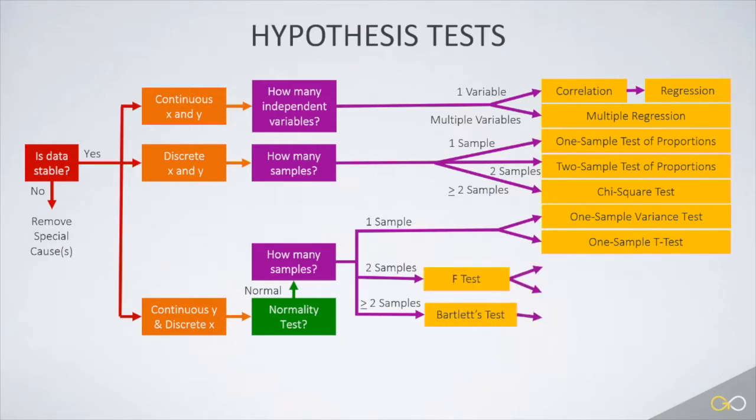If more than one sample, we need to do a variance test, either the f-test or the Bartlett's test. This is because the remaining tests are conducted differently, depending upon the answer to the question of whether the variances are equal.